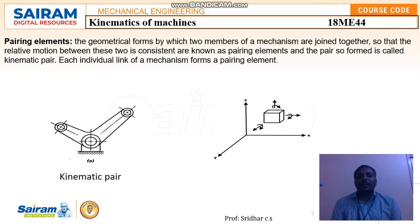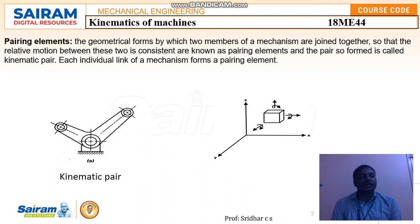These pairs are also called kinematic pairs. Each individual link of a mechanism forms a pairing element. Different motions form a mechanism and different mechanisms form a complete machine. So pairing elements are the joining of two members of a mechanism with a consistent relative motion, also called a kinematic pair.